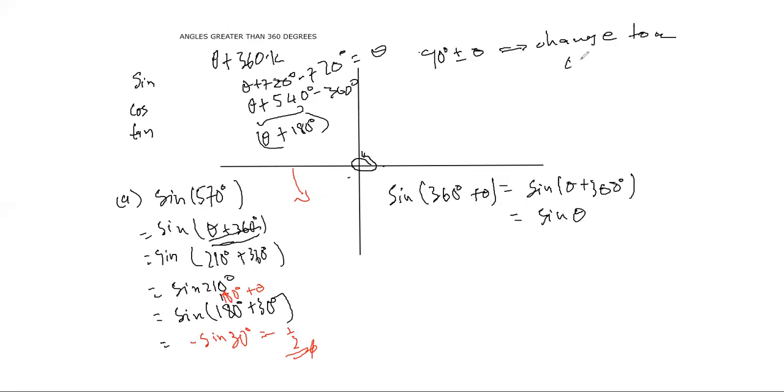By the way, notice something guys. On reductions, the reductions 90 plus or minus theta will require you to change to a co-function. And there's a video in which I discuss co-functions. And then the reductions 180 degrees plus or minus theta or 360 degrees plus or minus theta, they, you just, you don't change, the ratio remains the same. No change of ratio.